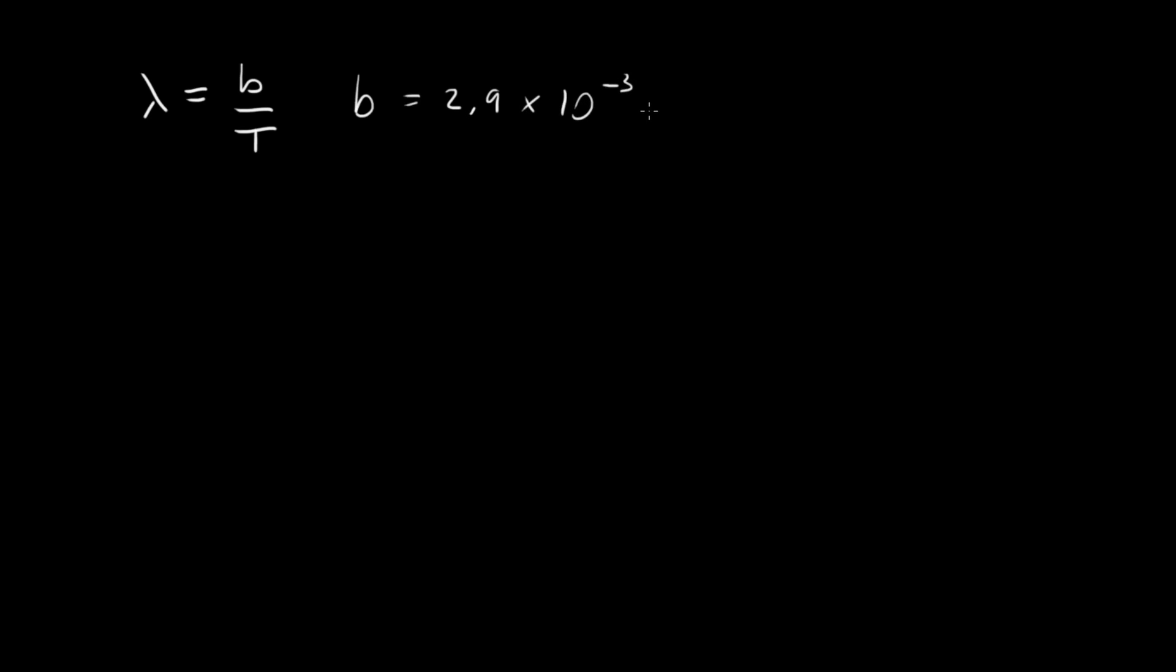And that constant we found was equal to 2.9 times 10 to the minus 3 meters kelvin. Just a quick units check: we see that we want something with meters on the left and on the right hand side we have meters times temperature divided by temperature so the units work out. We know this answer makes sense.